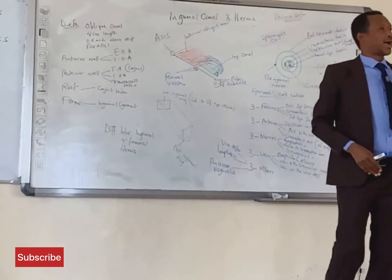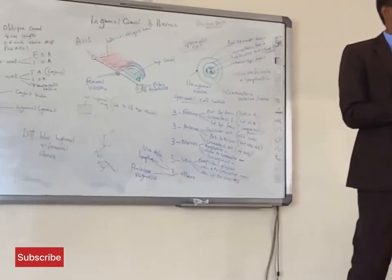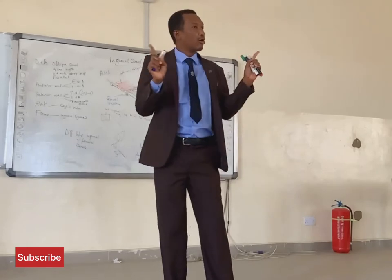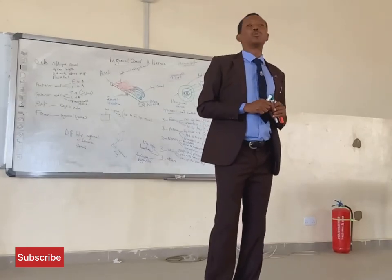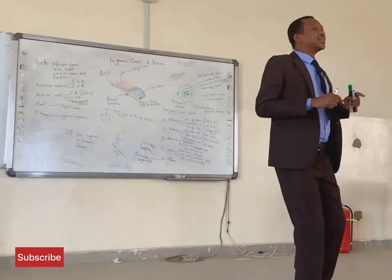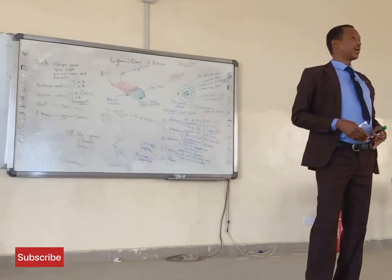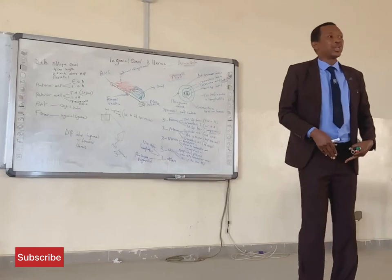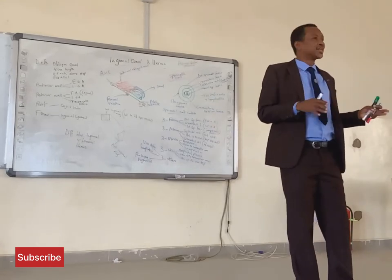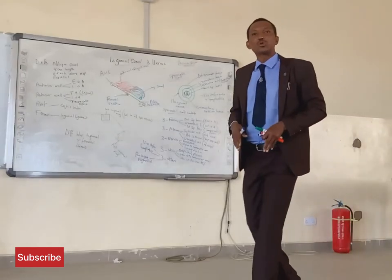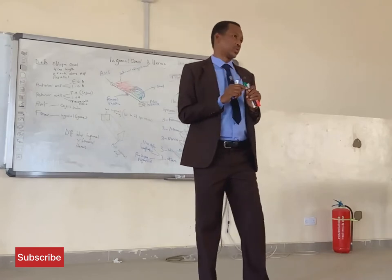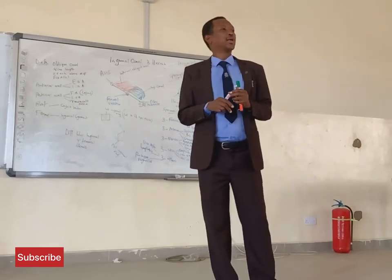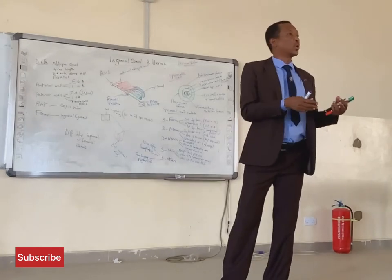The testicles travel outside because they do not tolerate the internal temperature of the abdomen. If the testicles remain within the abdomen, a person will be infertile. This is why the testicles develop from within the abdomen but descend outside — the internal temperature of the abdomen is almost 1 to 1.2 degrees centigrade higher than the external temperature. The testicles can only produce sperm cells when they are outside. People who retain testicles within the abdomen will be unable to have children.